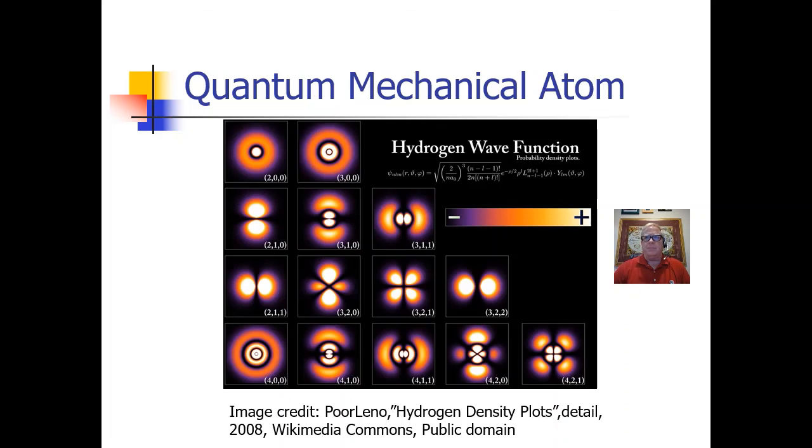These energy levels are no longer called orbits because they're not circular paths for the electrons to follow. So, they're sometimes called orbitals, a similar sort of term.